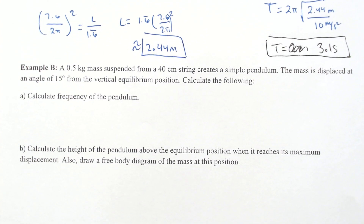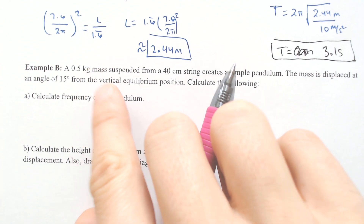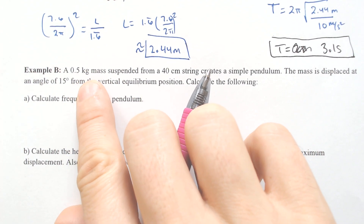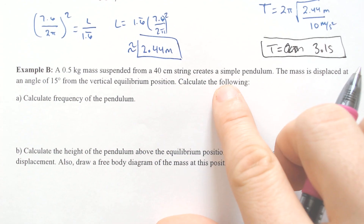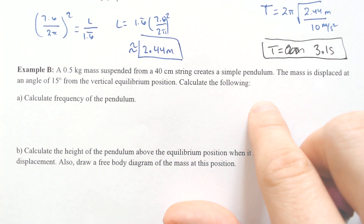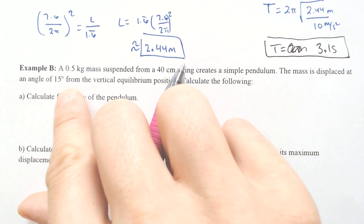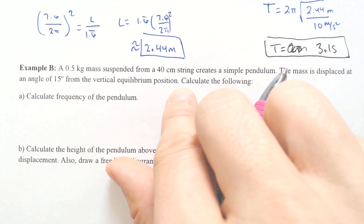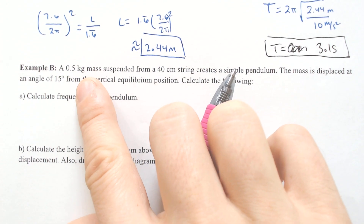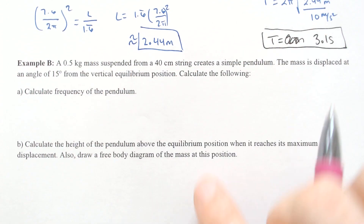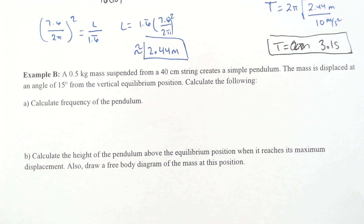Next — and actually the last one; it just has a few parts. A half-kilogram mass is suspended from a 40-centimeter string and creates a simple pendulum. The mass is displaced at an angle of 15 degrees from the vertical equilibrium position. The mass is not going to matter too much until we get to the parts where we want to find the tension on the string.